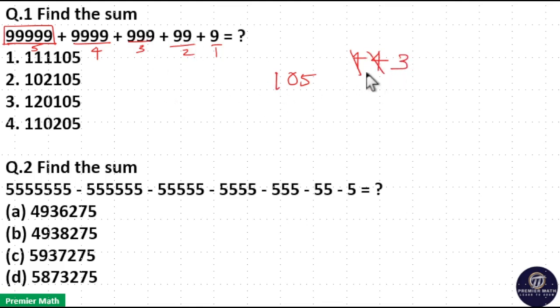2 into 9 is 18. 18 plus 3 is 21. 2 carry over. 1 into 9 is 9. 9 plus 2 is 11.